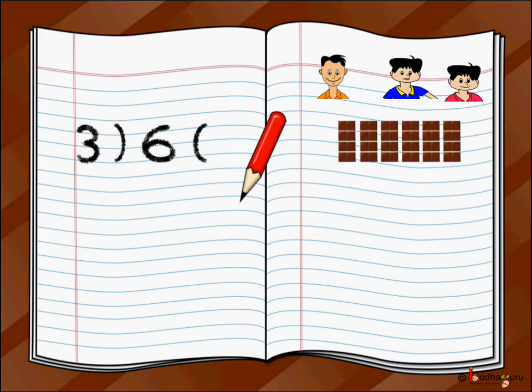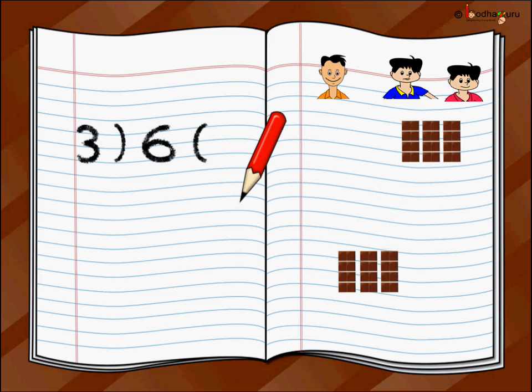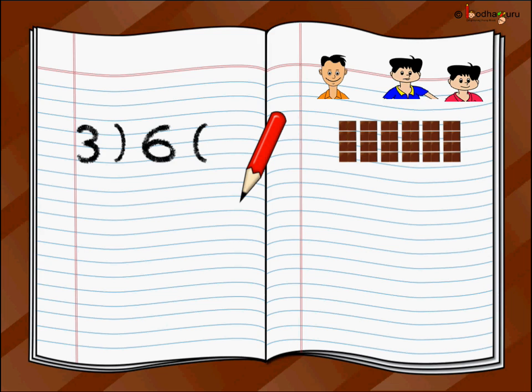So we have to divide six chocolates equally amongst three children. First, let us give one chocolate to each child — one, two, three. So we take three chocolates at a time, one for every child. And how many such groups of three chocolates can we make out of six chocolates?